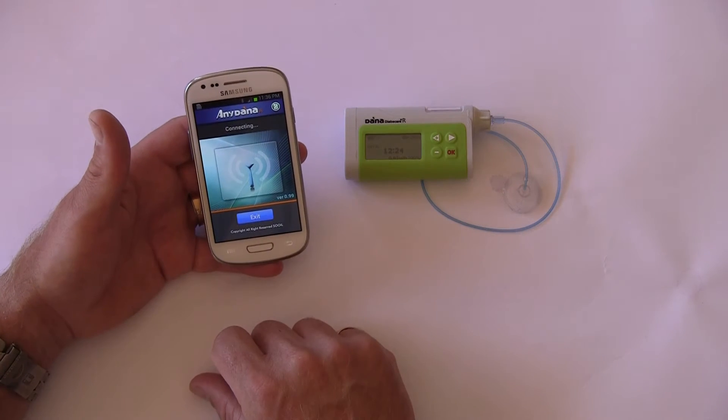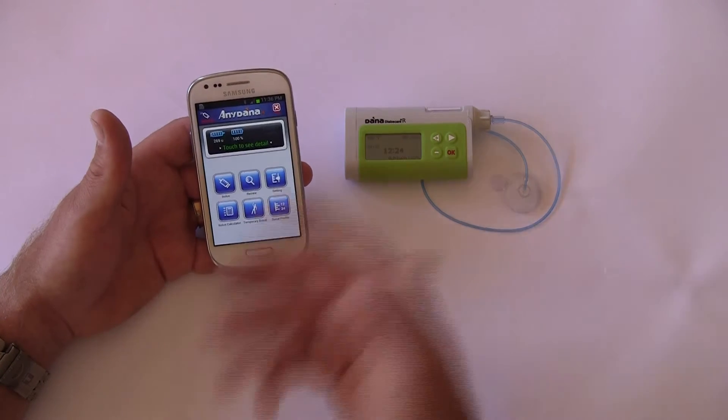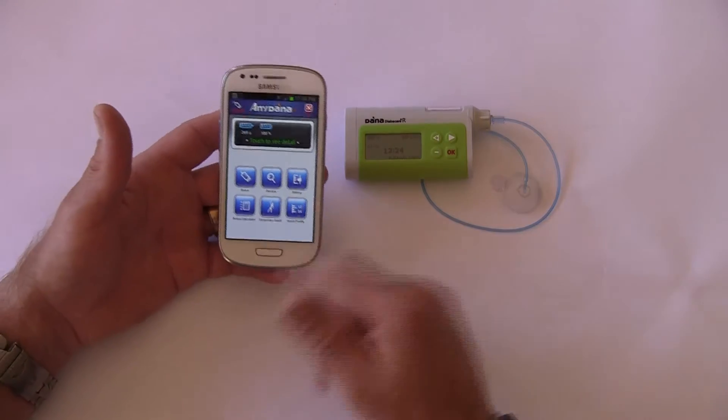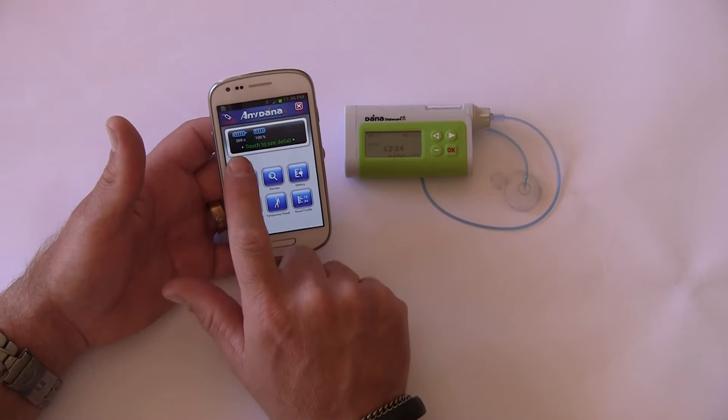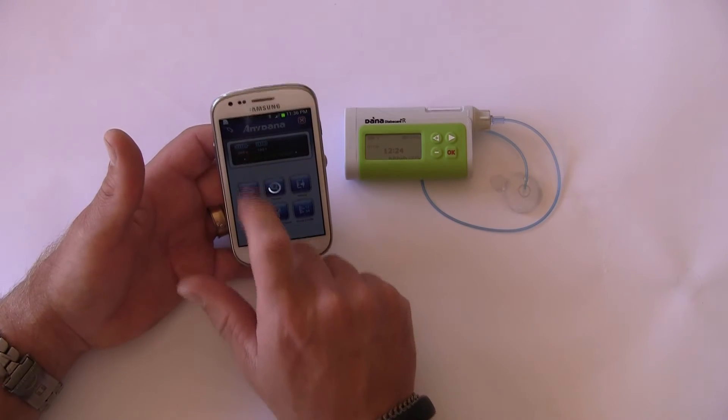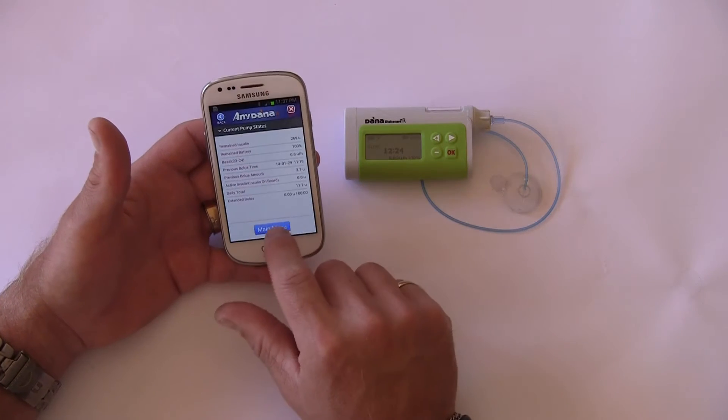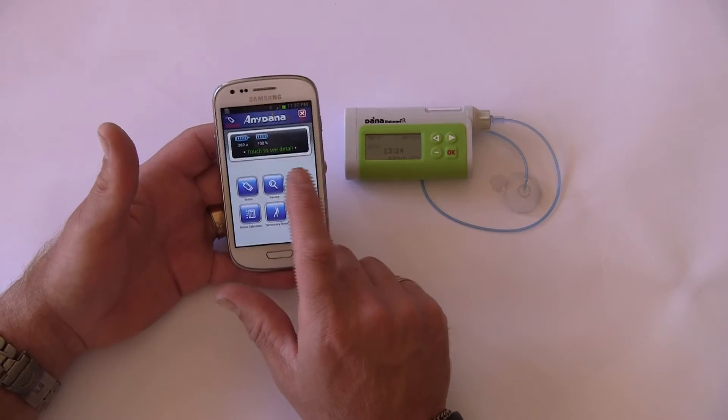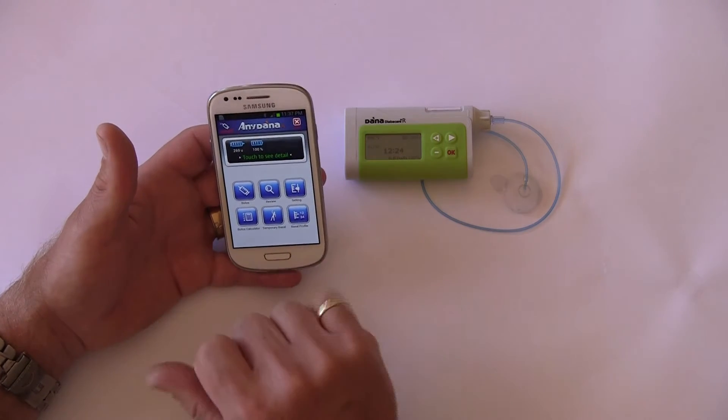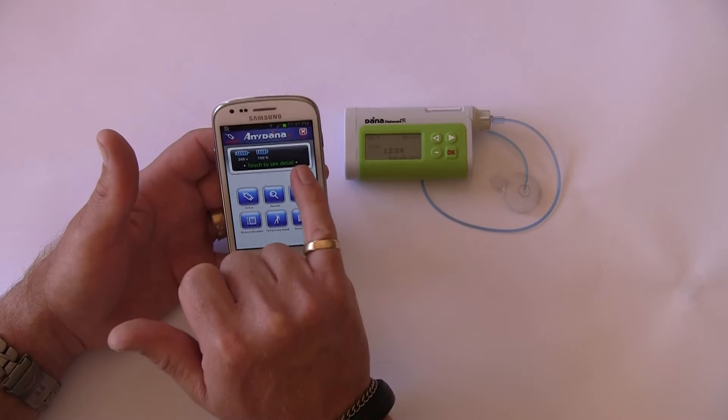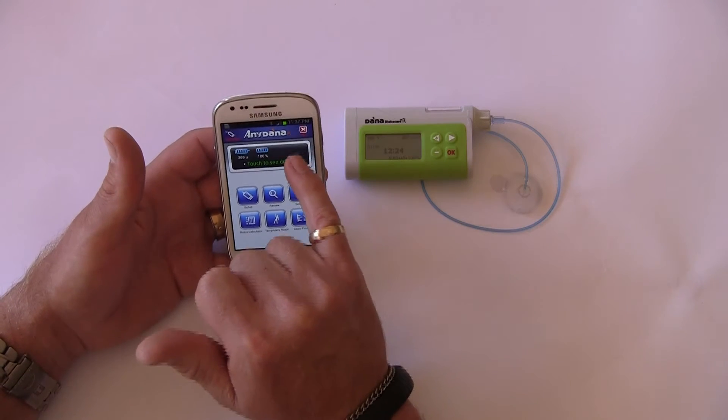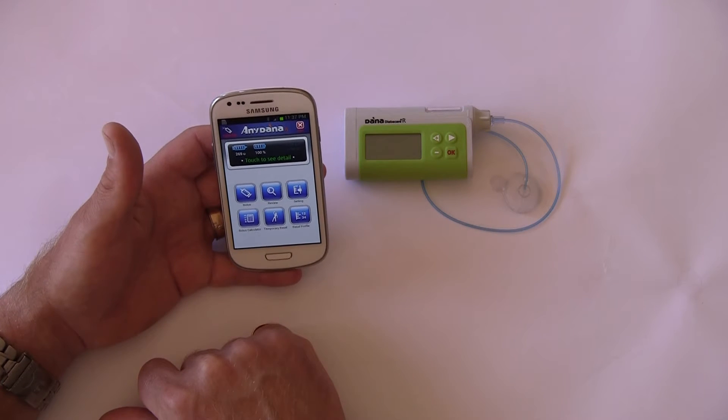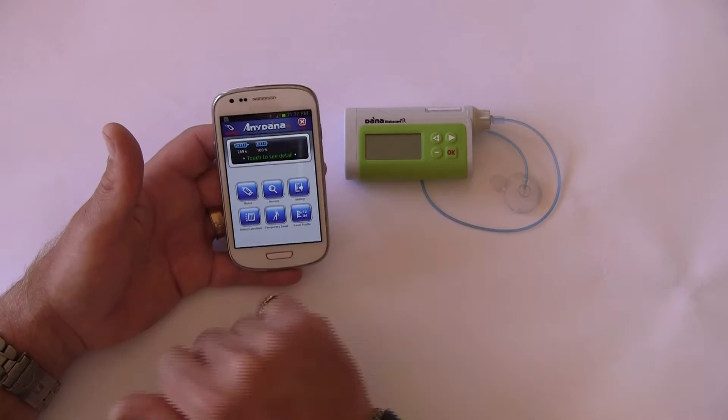Now, looking at the menu bar of the pump, we can see that the pump has 269 units in the reservoir, the battery is 100% capacity, and in the top right-hand corner, it says that the pump is currently running at 0.83 of a unit per hour, which is 100% of its normal basal rate at this time of the day.